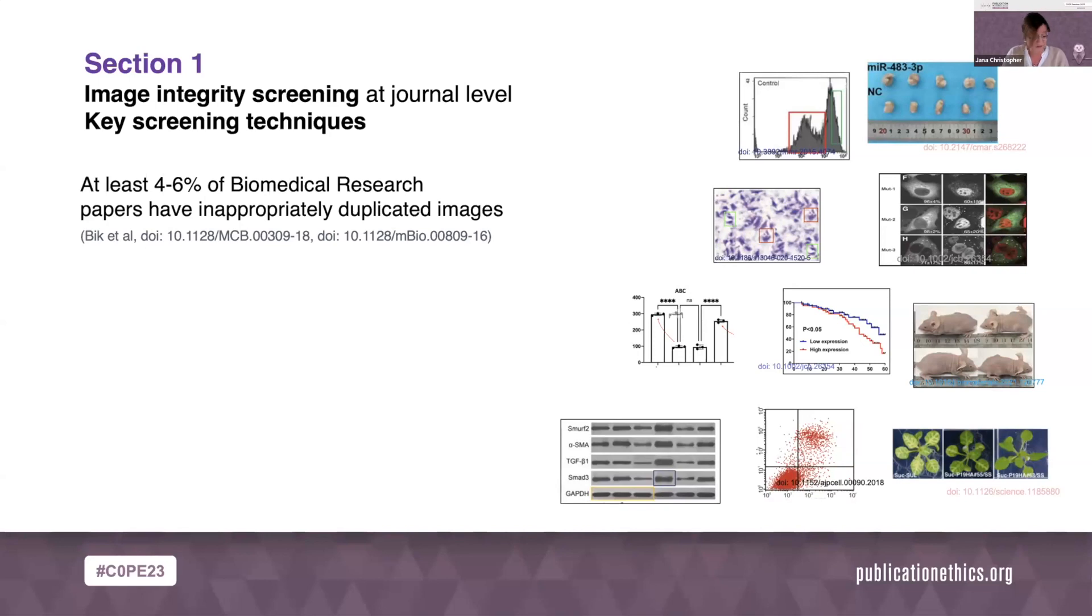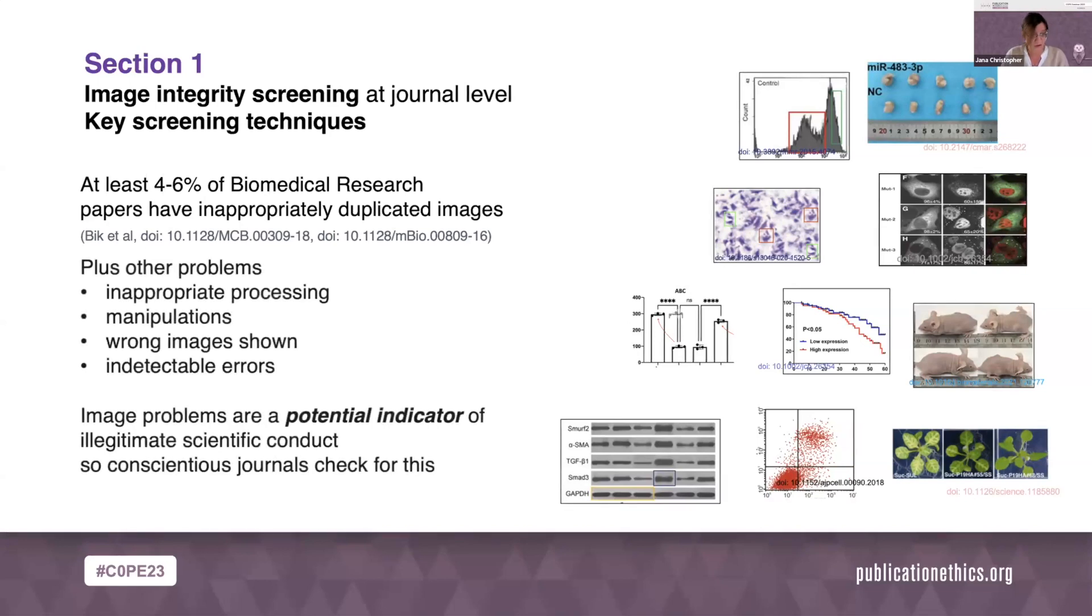There are plenty of other additional problems to look out for, such as inappropriate processing, manipulations and alterations, images that are not what they're labelled to be, and of course, an unknown quantity of indetectable errors and issues that remain unreported. What we must remember is that image problems are a potential indicator for illegitimate scientific conduct, or at least of unreliability to a certain degree.